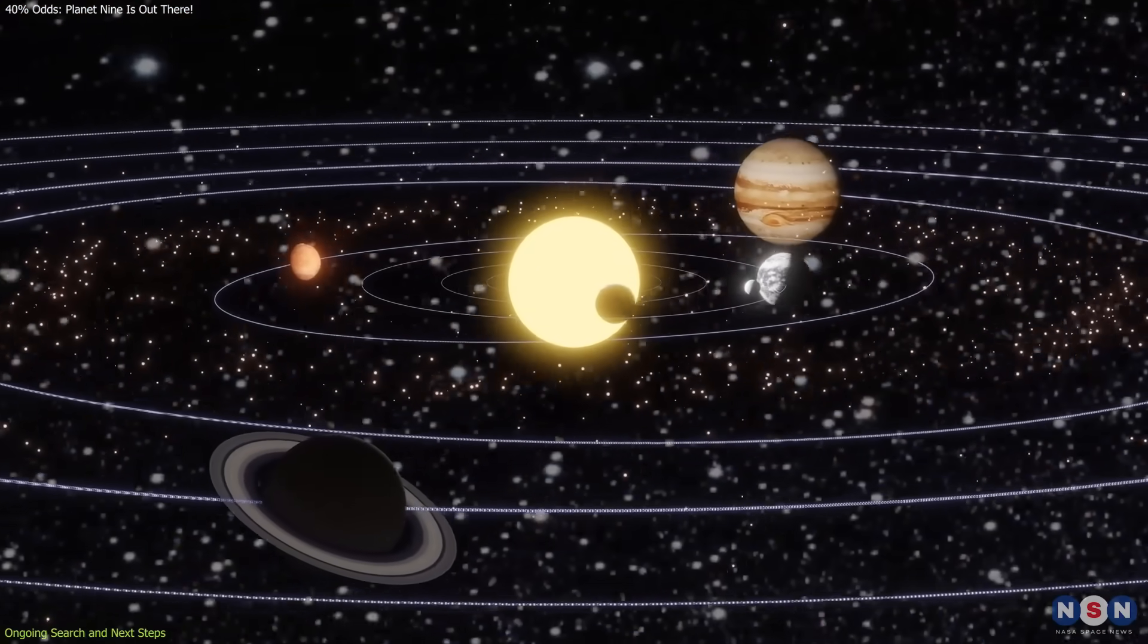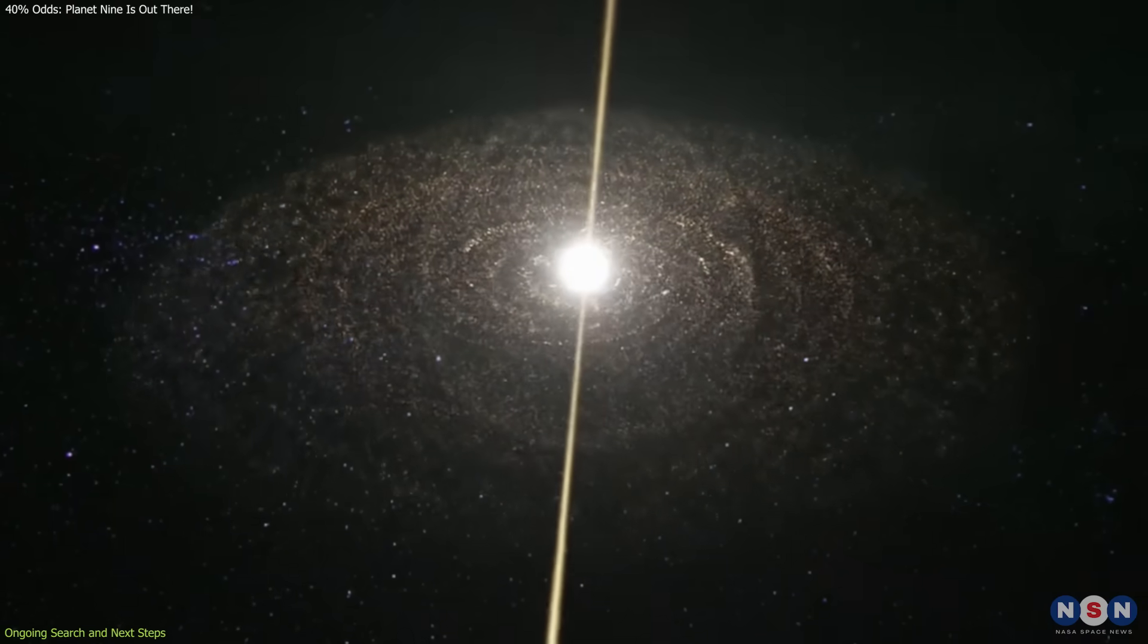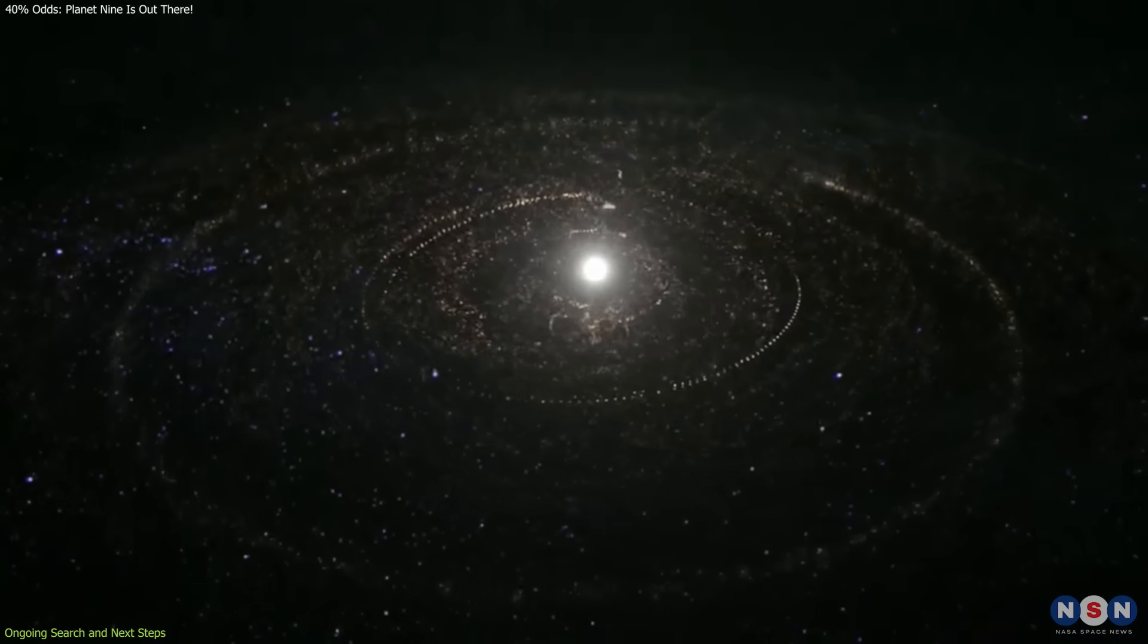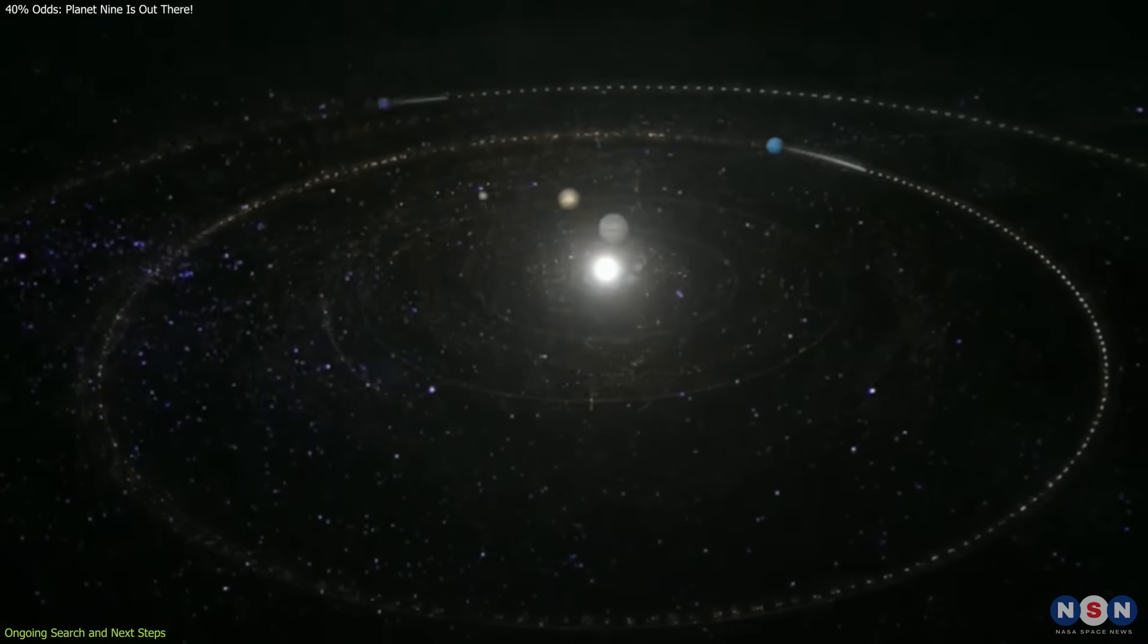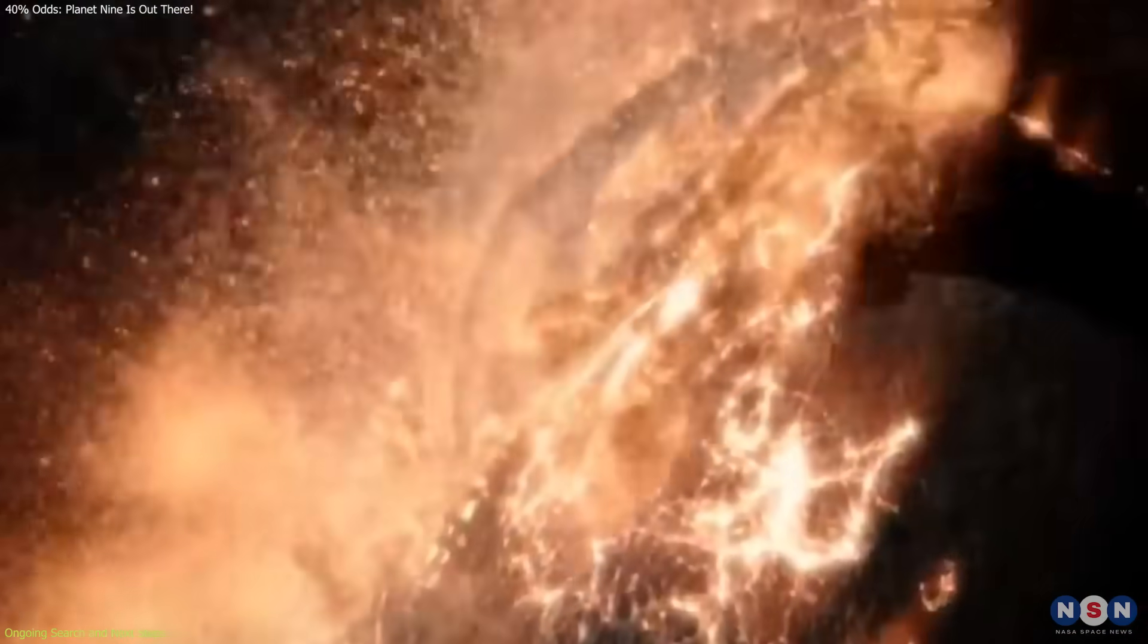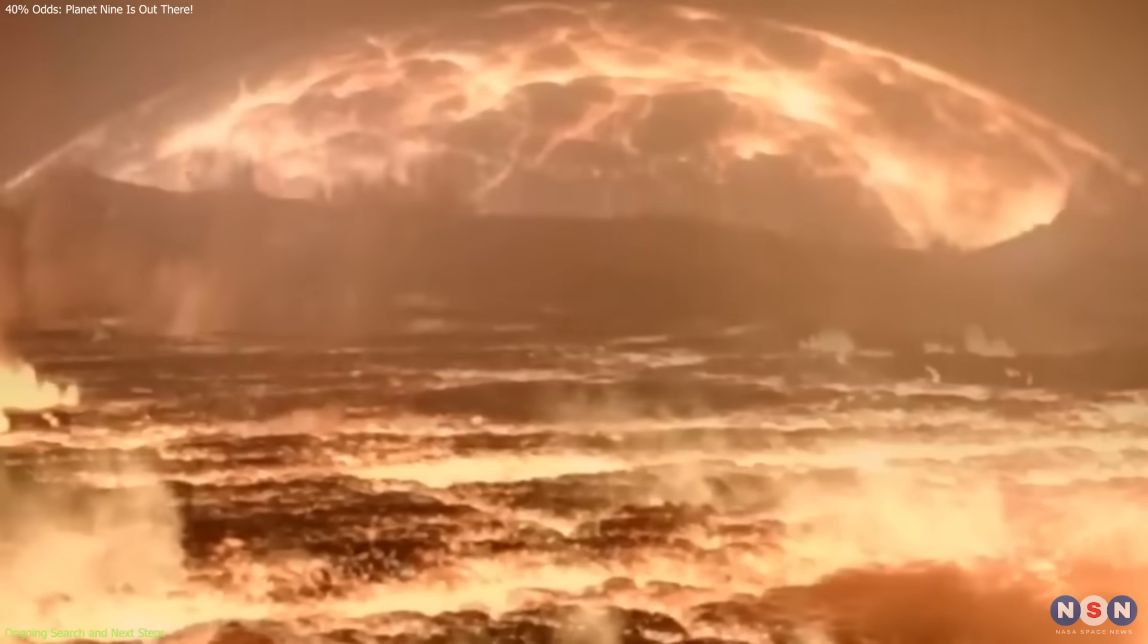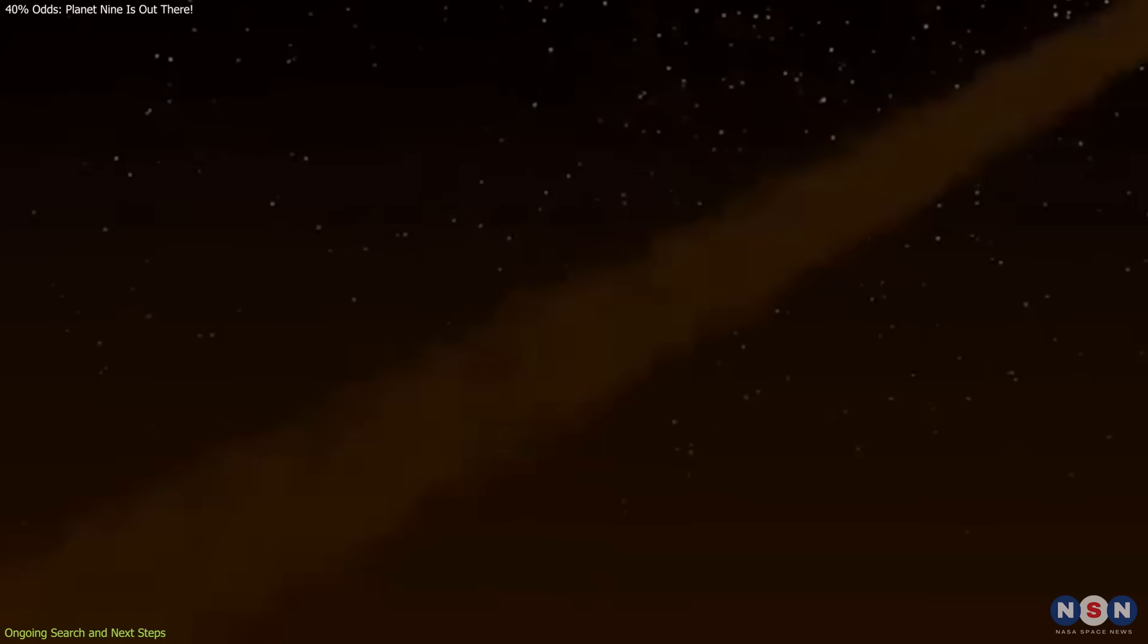It also prompts a reassessment of solar system evolution models. Rather than imagining a relatively smooth outward migration of Uranus and Neptune, the simulations support a more chaotic period involving gravitational encounters, close planetary interactions, and external stellar influences.